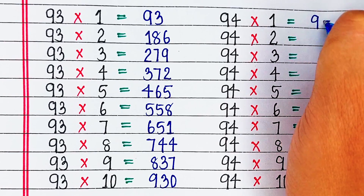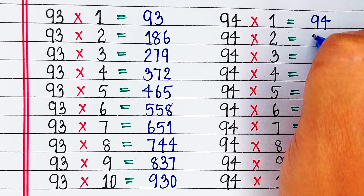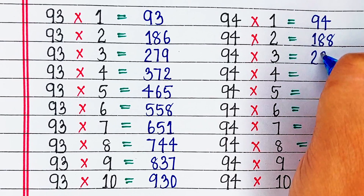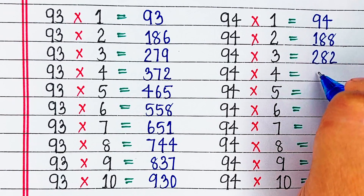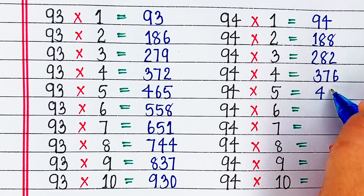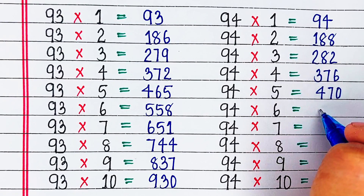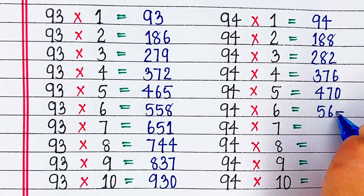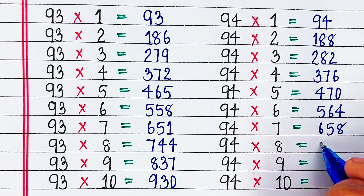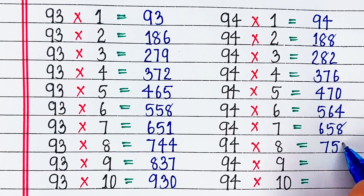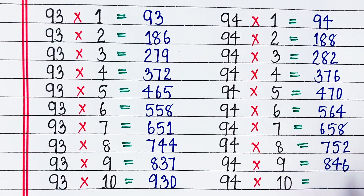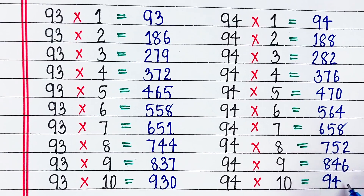Next is table of 94. 94 ones are 94. 94 twos are 188. 94 threes are 282. 94 fours are 376. 94 fives are 470. 94 sixes are 564. 94 sevens are 658. 94 eights are 752. 94 nines are 846. 94 tens are 940.